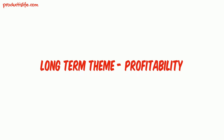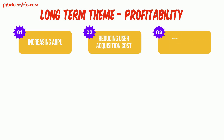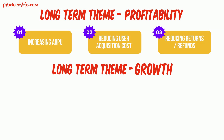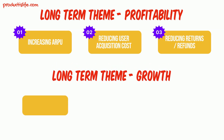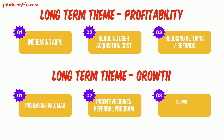For example, if the business goal for this year is to achieve profitability, then you may want to focus on increasing ARPU — your average revenue per user — or reducing user acquisition cost, or reducing returns and refunds. If the business goal is growth, then you may want to focus on increasing DAU or MAU, or an incentive-driven user referral program, or building a coupon or discount flow in the system.